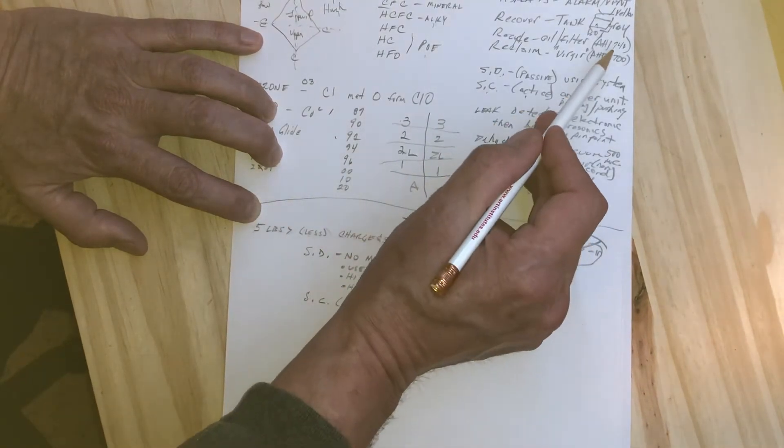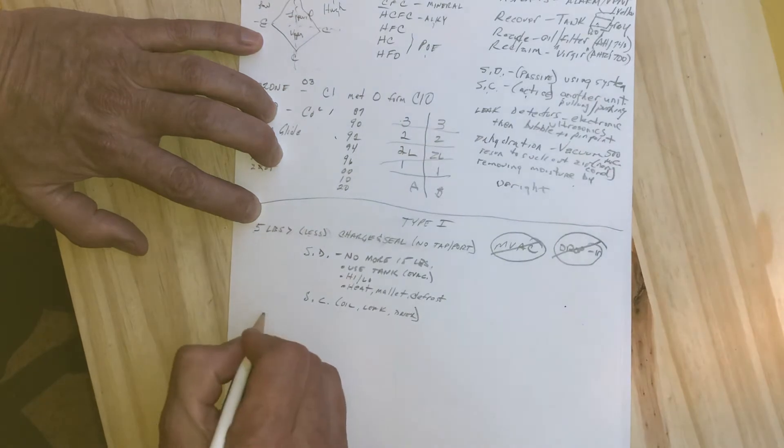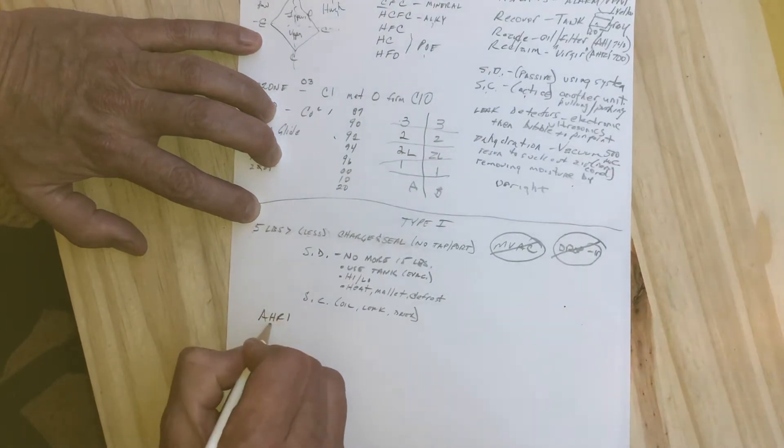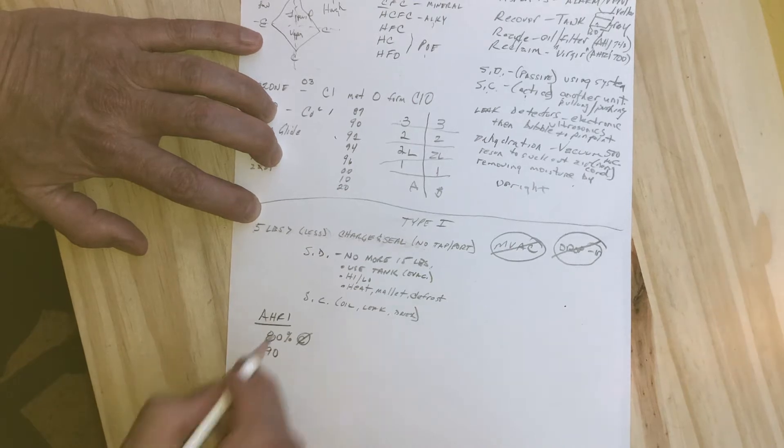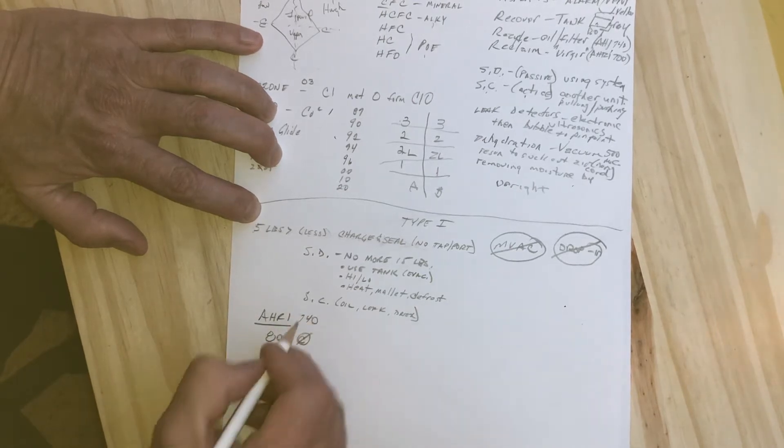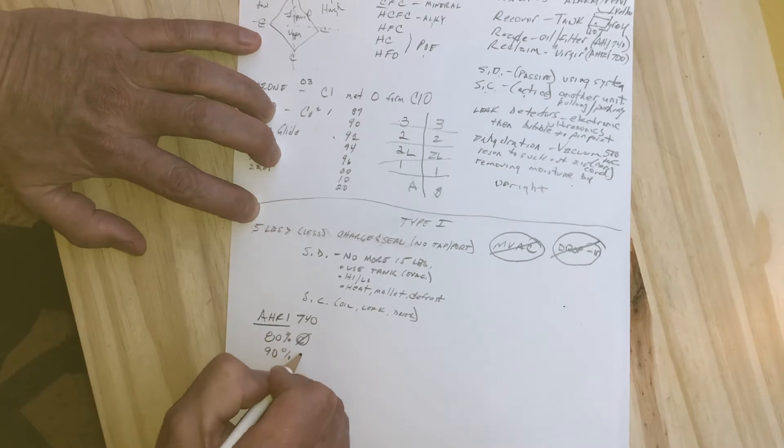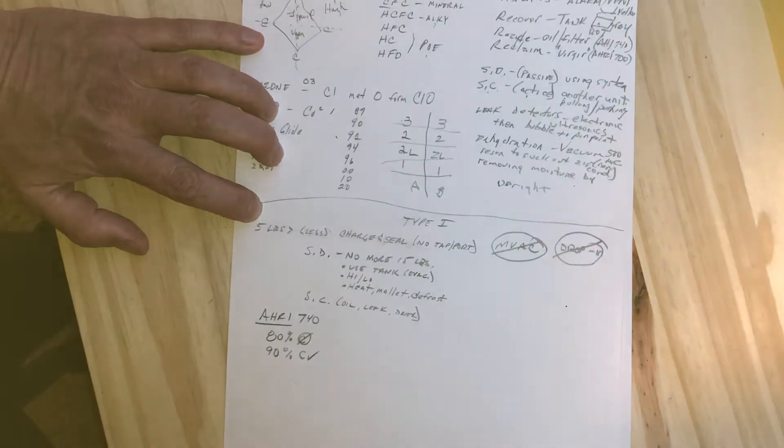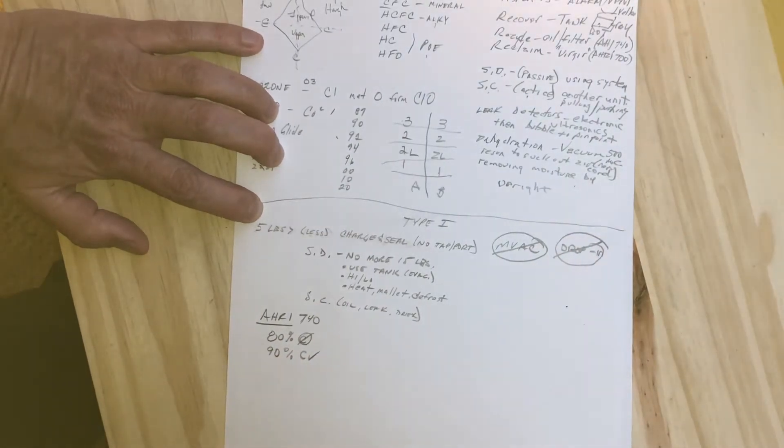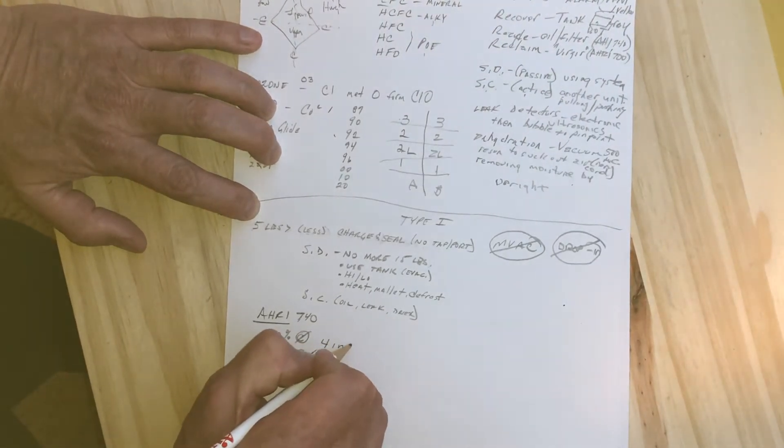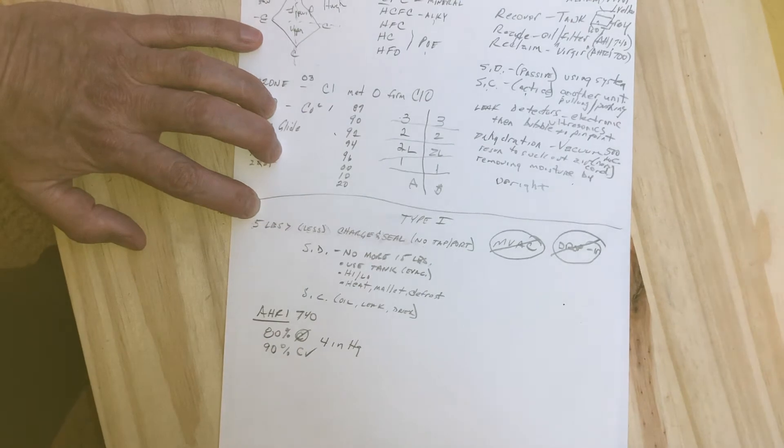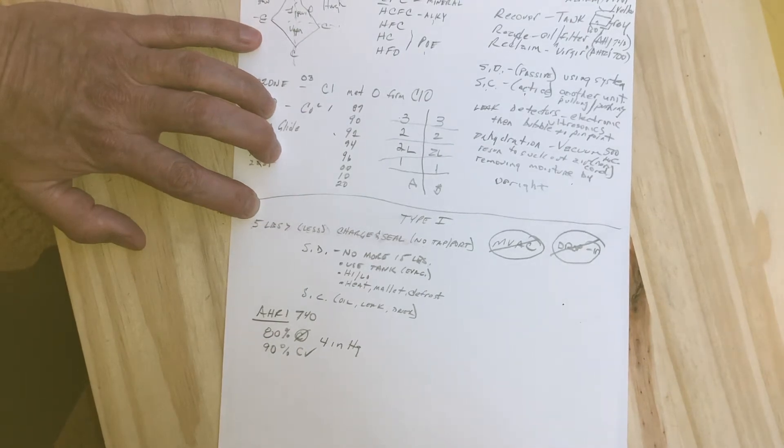Let's talk about AHRI 740. It's an 80-90 rule now, where either the compressor doesn't run and you've got to suck 80% of the refrigerant out, or the compressor does run and checks out and you can get 90% of the refrigerant. As long as we're getting down to a 4-inch mercury vacuum, that's really all they're looking for.